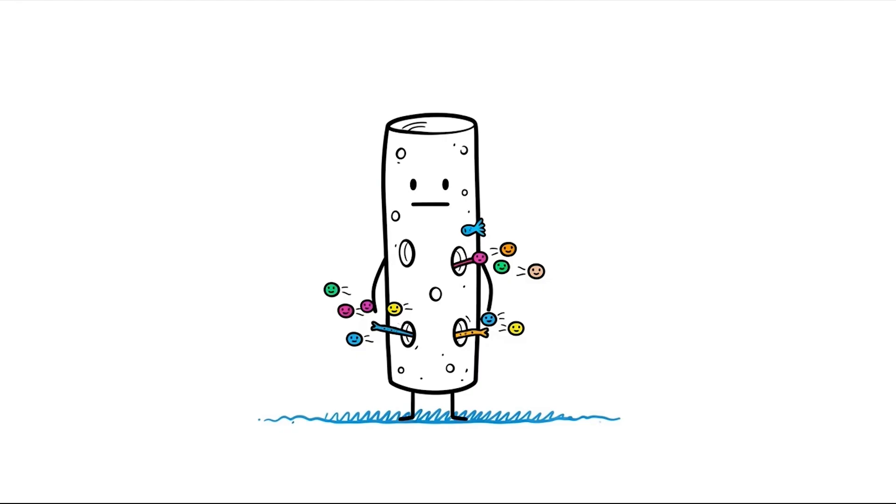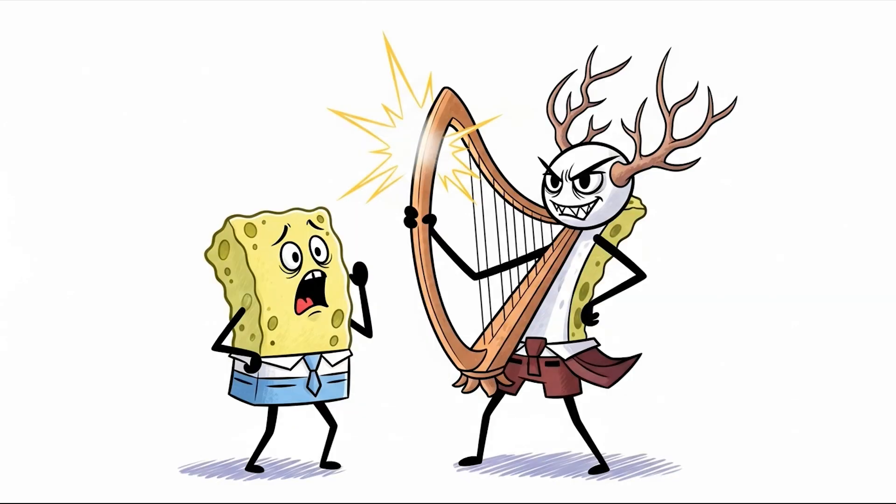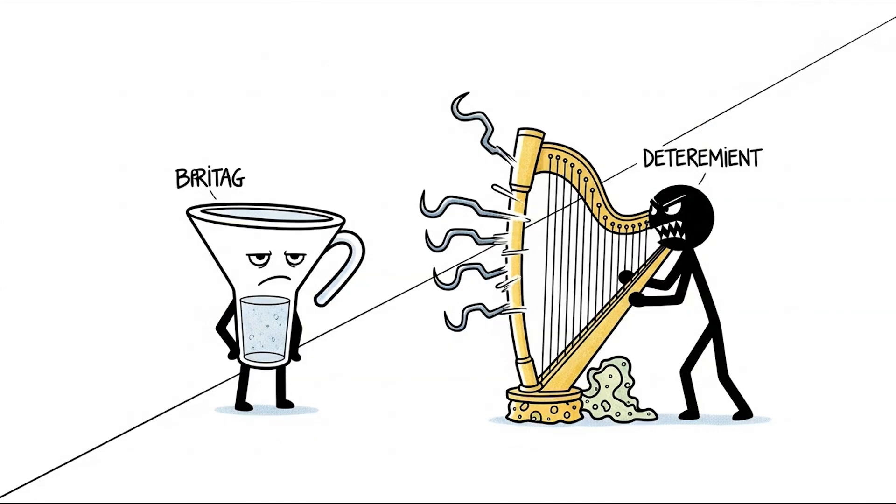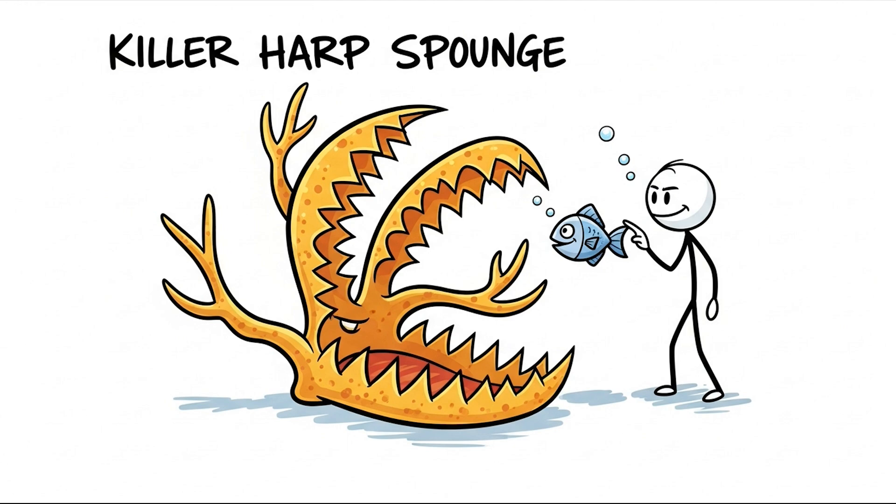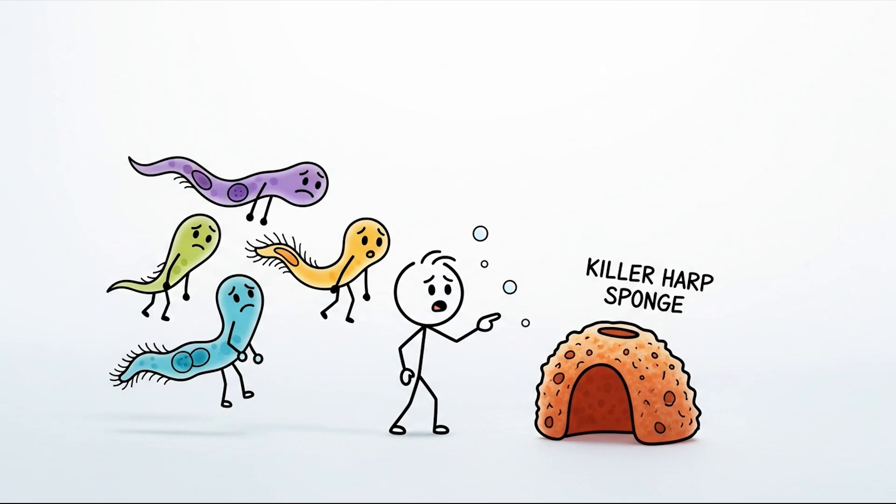The Carnivorous Sponge, the Killer Harp Sponge. You probably picture sponges as stationary, filter-feeding organisms, little underwater Brita filters. But prepare to have that notion shattered by the Killer Harp Sponge. This creature looks less like a filter and more like a musical instrument transformed into a weapon. It has grown hooks all over its body, essentially turning itself into living Velcro, a deadly trap for any unsuspecting creature that brushes against it.